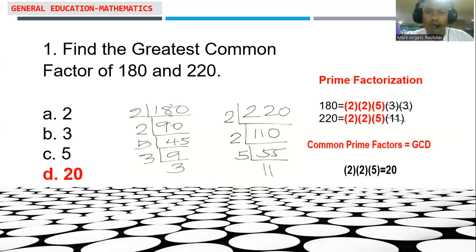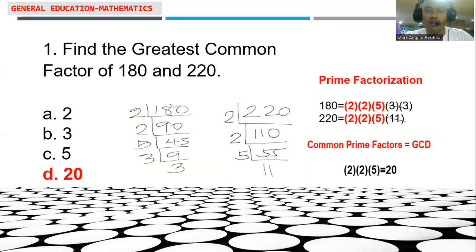Prime numbers are numbers having factors of only 1 and itself. In order to find the greatest common factor of 180 and 220, we use the process of prime factorization. The prime factors of 180 are 2, 2, 5, 3, and 3.